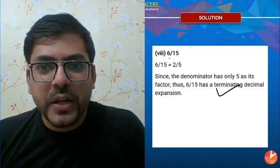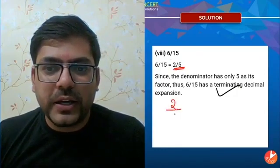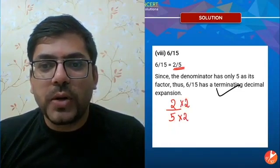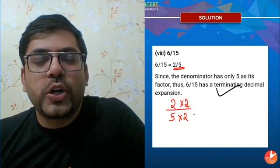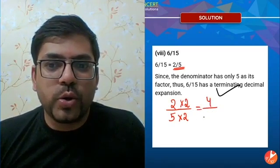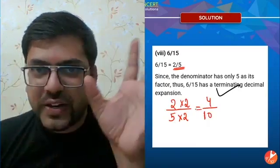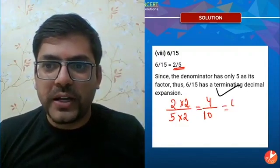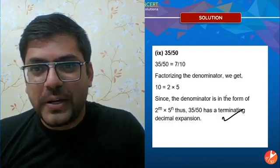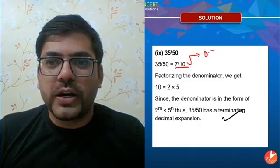For 6/15 simplified to 2/5: multiply numerator and denominator by 2 to get 4/10, which gives 0.4. For part 9, which is 7/10: that is directly 0.7.